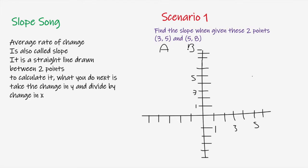Let's refresh our memory of what slope is. As the song states, average rate of change is also called slope. Slope is the same thing as the average rate of change between two points, and it can also be represented as a straight line drawn between two points.